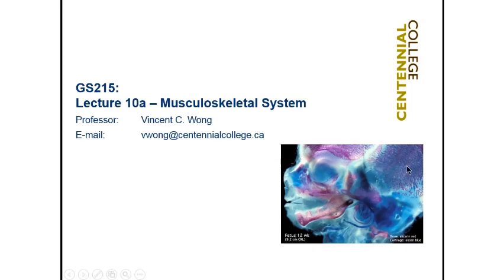In this picture we can see a 12-week-old fetus, and there are two colors here. The red is actually calcified bone, and the blue is the cartilage. So when we are in embryonic development, we start off as completely cartilage, and we slowly convert that cartilage into bones by putting calcium in them. This process is called ossification — more on that later.